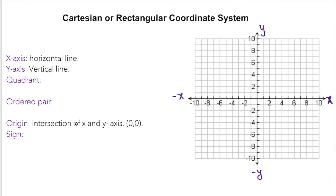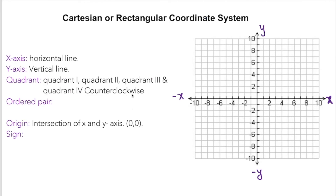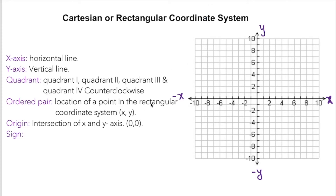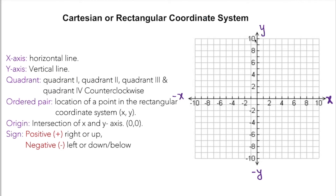The intersection of the axes creates four sections: quadrant one, quadrant two, quadrant three, and quadrant four, going counterclockwise. Every point in the coordinate system is called an ordered pair — it describes the location of a point in the rectangular coordinate system. The sign rules are: right and up are positive, left and down are negative. So x positive means right, y positive means up; x negative means left, y negative means down. Understanding these signs is crucial for plotting points.